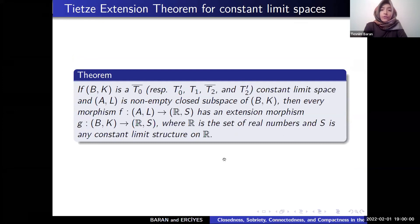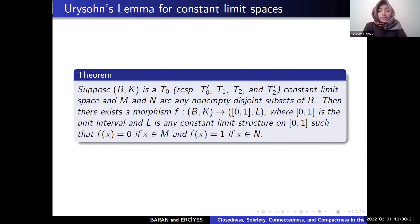And Tietze Extension Theorem for constant limit space. If (B,K) is T0 bar constant limit space and (A,L) is a non-empty closed subspace of (B,K), then every morphism F has an extension morphism where R is the set of real numbers and S is any constant limit structure on R.